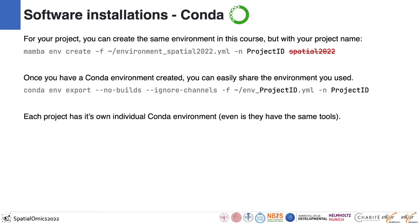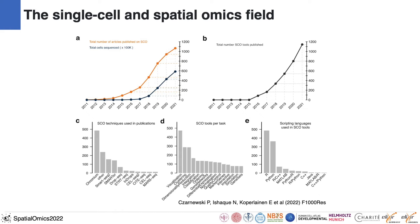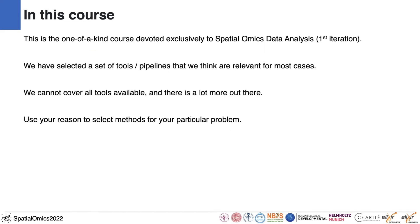These are general guidelines for using course resources in your own projects. The single-cell spatial omics field has grown exponentially, with many techniques, technologies, and over 1,200 tools developed. This course aims to be one of the first with a truly comprehensive overview of different spatial omics techniques and integration with single-cell data. It's also the first iteration, and we've selected the tools and pipelines we think are most relevant.